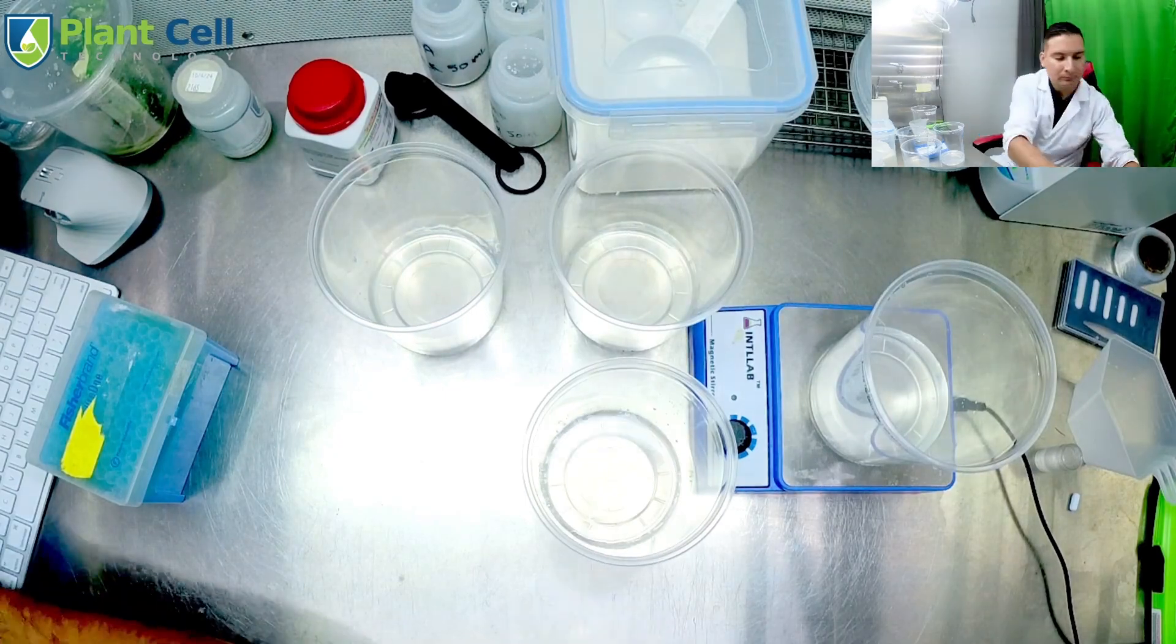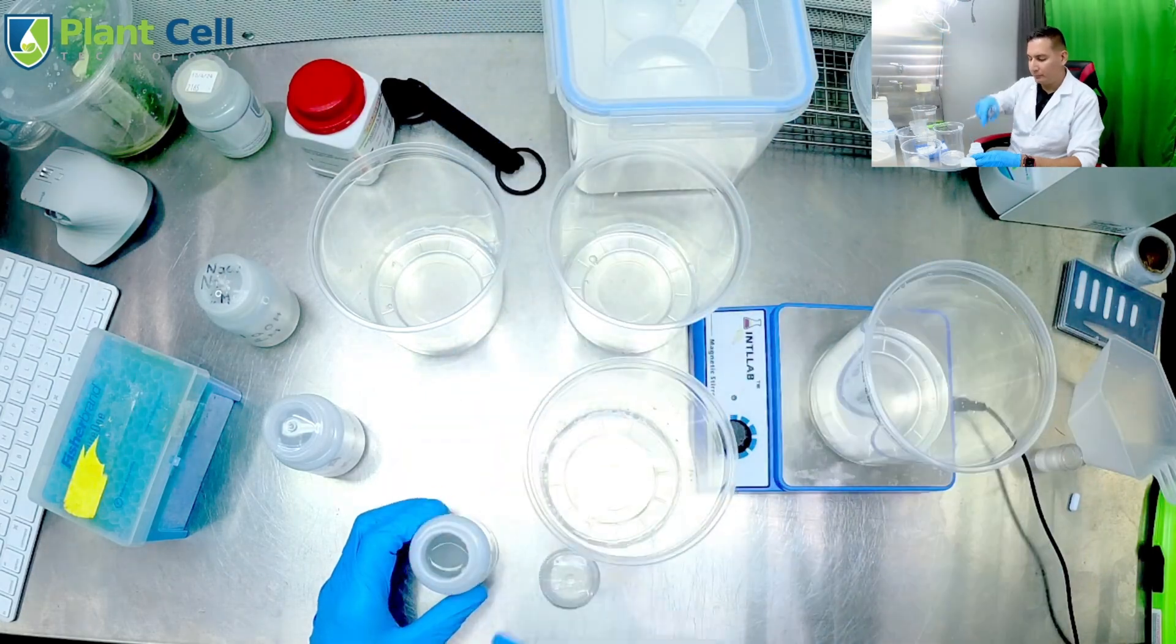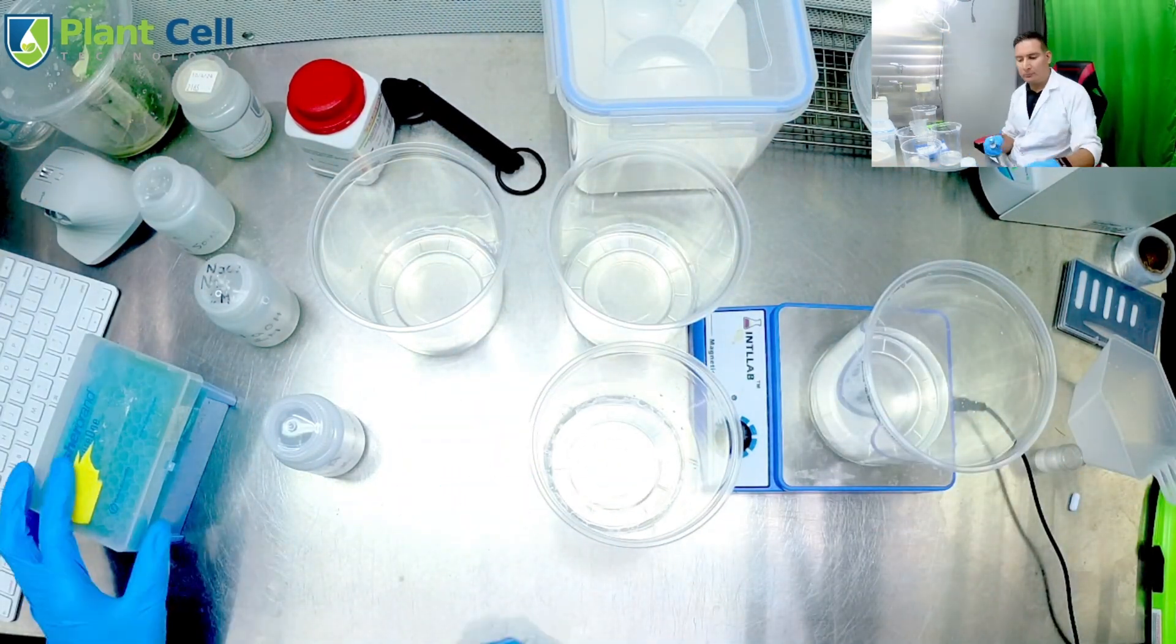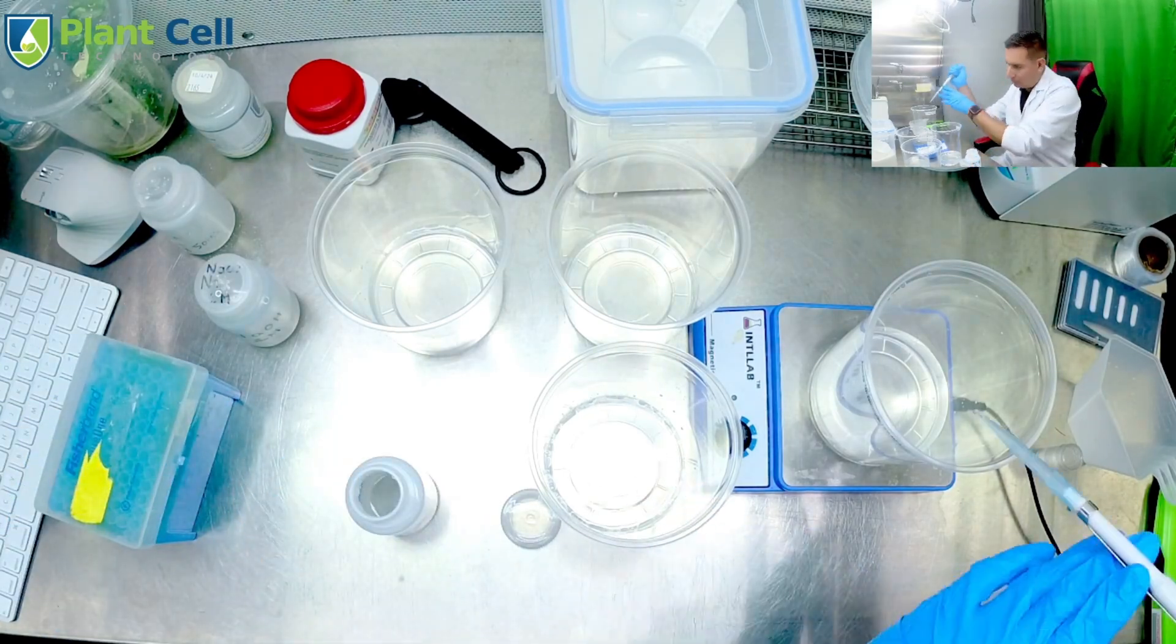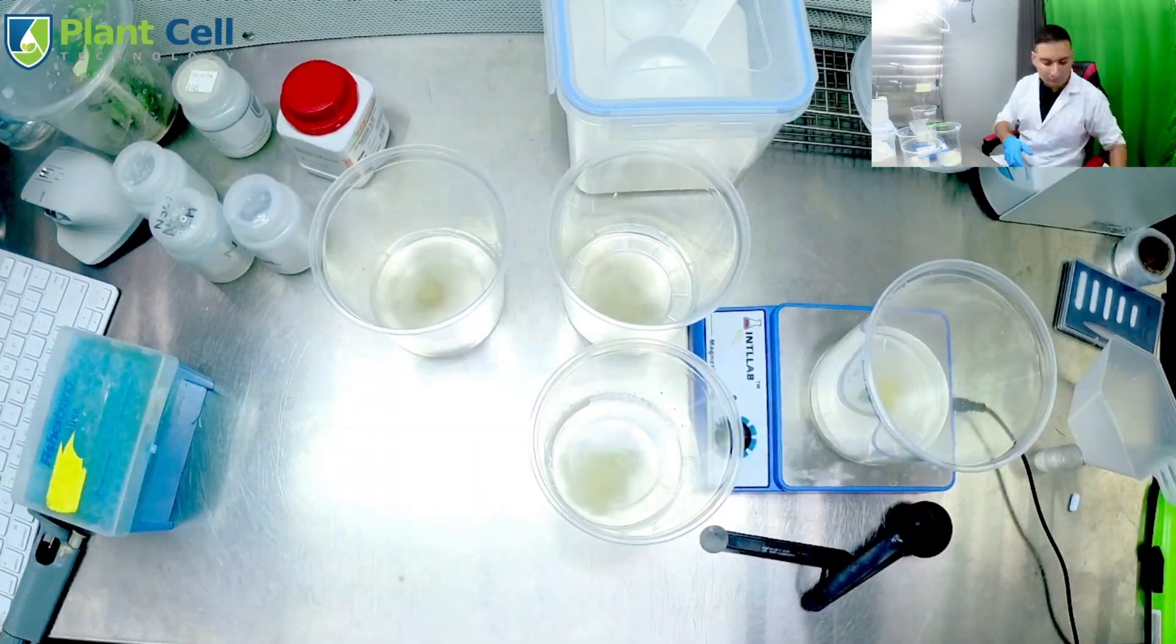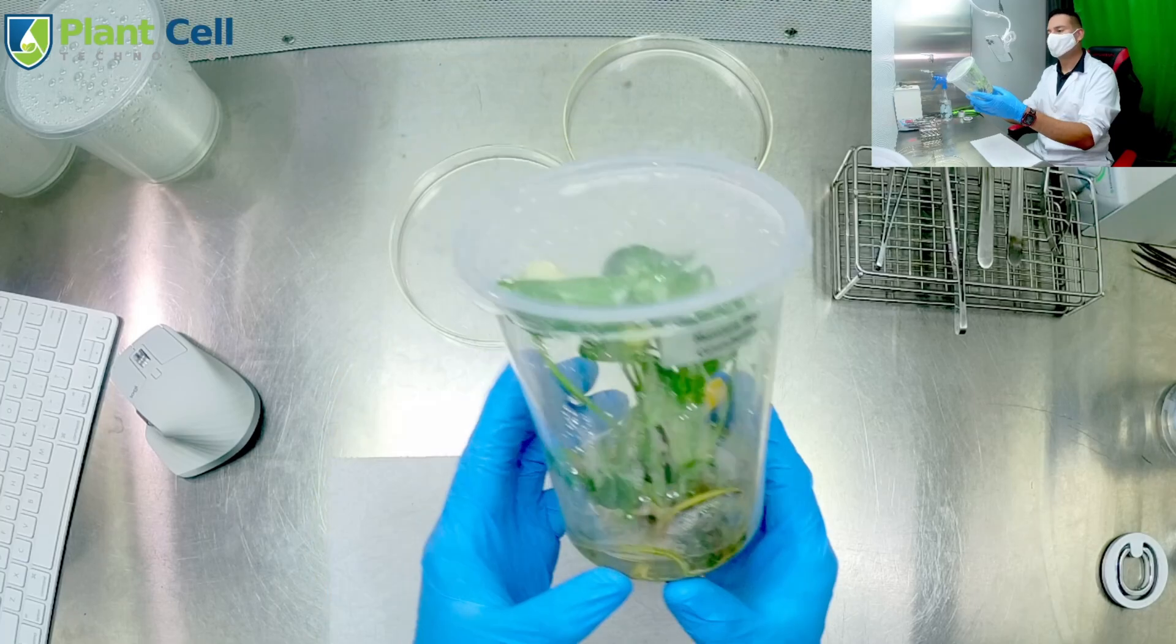Now when working with monsteras like Monstera deliciosa Thai Constellation or any of these variants like albo, you have to be patient because it's a plant that grows very slowly. I started with one small plant back in February, so about six or seven months ago.